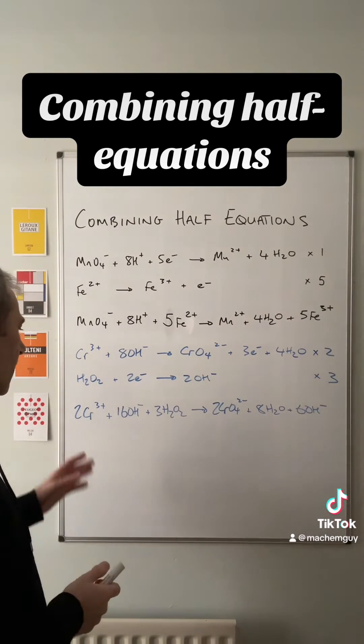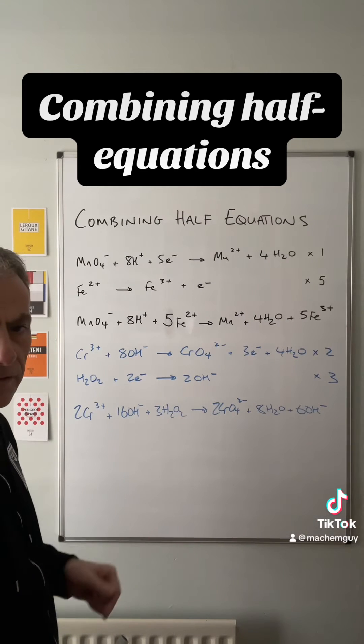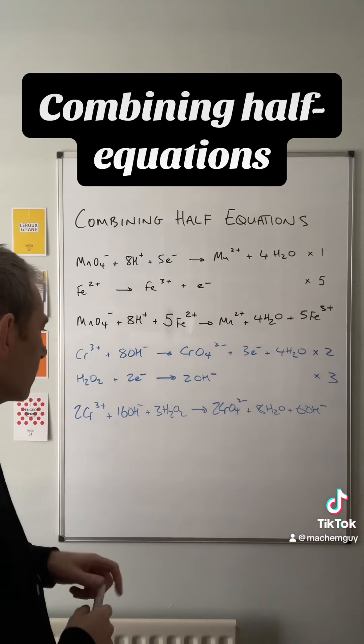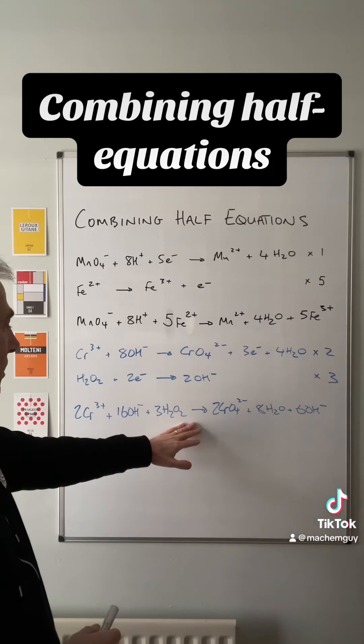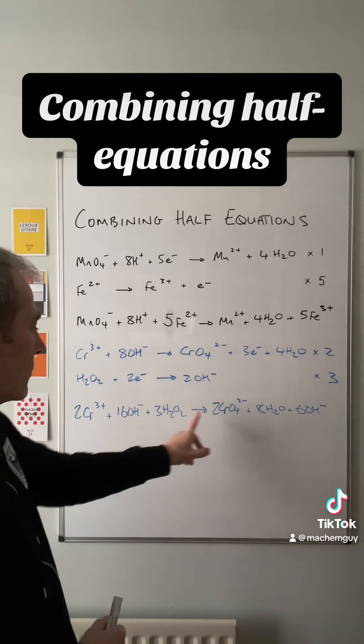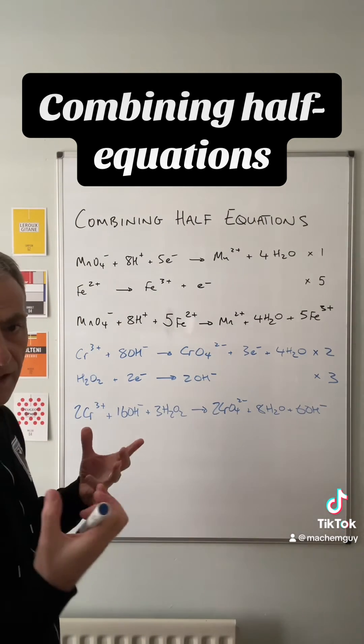So that's what you get when you multiply out the half equations and just add them together. You'll notice the electrons aren't there because they cancel. But we can't leave this as our final redox reaction because we've got like terms on each side of the equation.